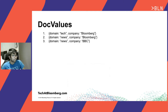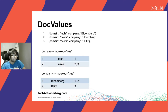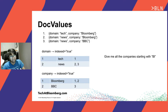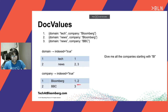Let's take a quick sidestep to understand what doc values is and how it speeds up faceting. Take an example where we have three documents in our Solr collection with two basic fields: domain and company. If we ingest this data and index these two fields, Solr will store an inverted index data structure. If you send a simple query — give me all the companies starting with 'BL' — Solr looks up the inverted index for the field 'company' and finds the matching documents. It's really straightforward to get that right.